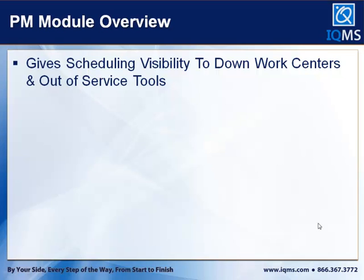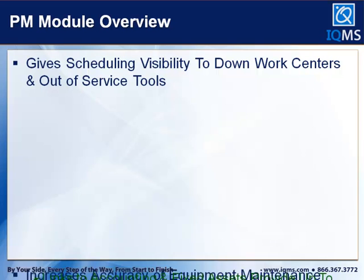The module also gives you visibility to down work centers and out-of-service tools. In the finite scheduling tool, you can actually schedule preventive maintenance work orders. For tooling, you can set out-of-service date ranges with reason codes as to why they're out-of-service. If somebody moves a production order into the finite schedule in a time interval where that tool is out-of-service, we'll put a graphical flag on the scheduling tool to let them know. As they drag and drop that work order back into an interval where the tool is available, it'll remove the flag.